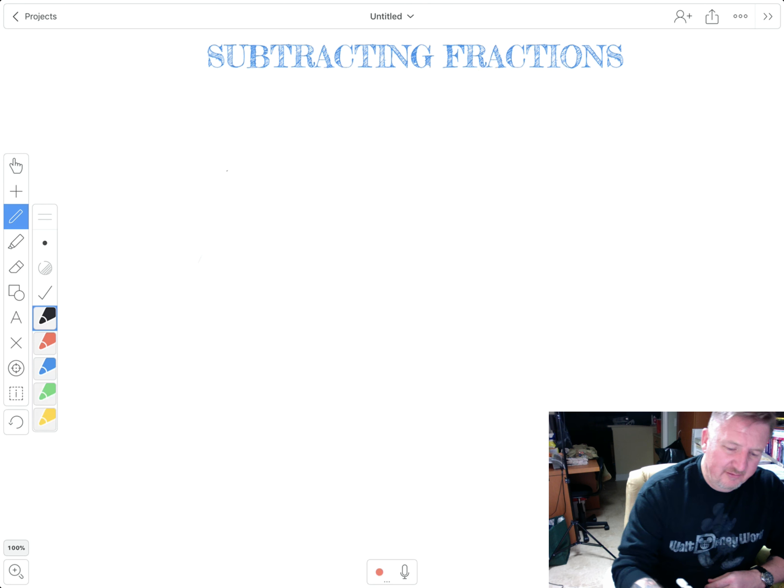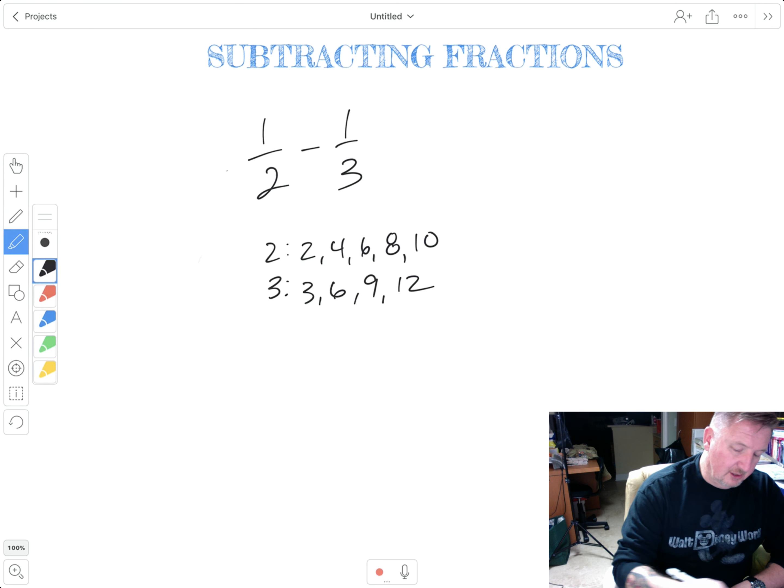Next example, one half minus one third. Here we have two different denominators. So we've got to use LCM again to come up with the least common denominator. So I list the multiples of two. And I list the multiples of three. Two, four, six, eight, ten. I'll just do that. Three, six, nine, twelve. I think we've got enough. Let's go ahead and look. There's not another two. There's not another four, but there is a six. So six is going to be my least common denominator.